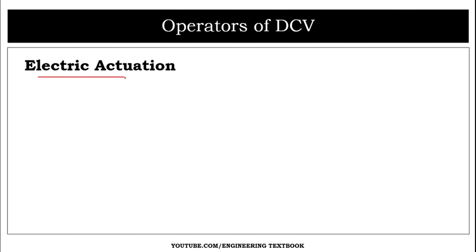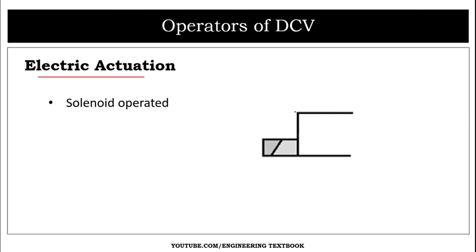For electric actuation, there is only one method: solenoid operated. Here is the symbol of the solenoid operated valve.